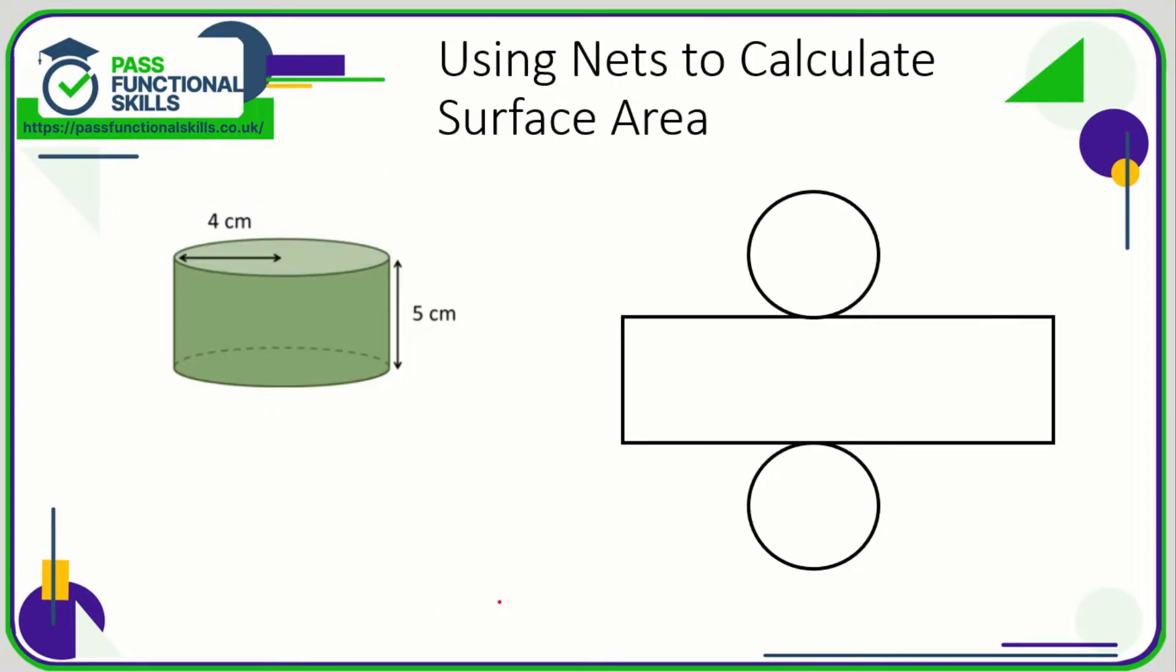We could use a net to calculate the surface area. Here is the net of this cylinder. Remember, a cylinder is a rectangle and a circular top and a circular bottom. The area of a circle is pi r squared, so usually we'd be told that pi is 3.14.